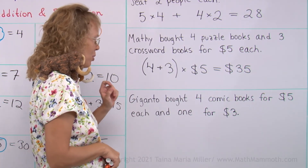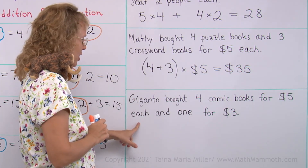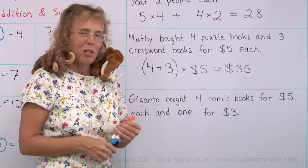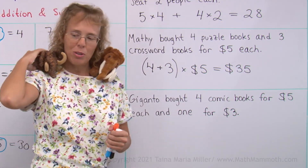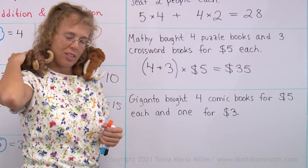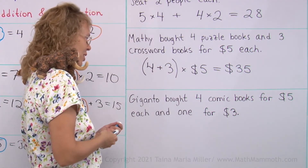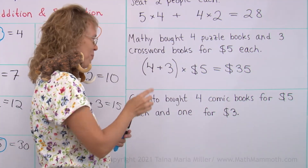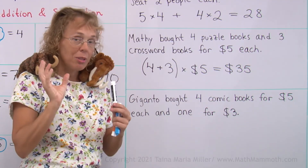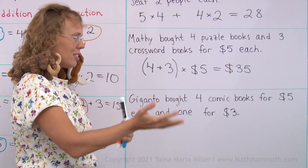Giganta bought four comic books for $5 each and one for $3. What's the total cost for buying all those comic books? Can you solve it? Four comic books for $5 each — that's multiplication, many times the same thing.